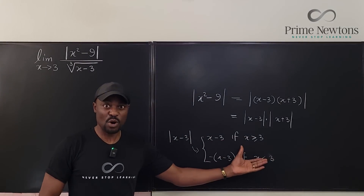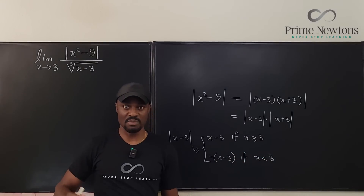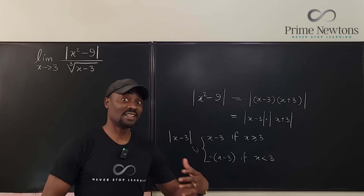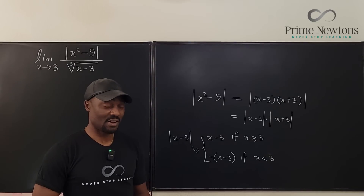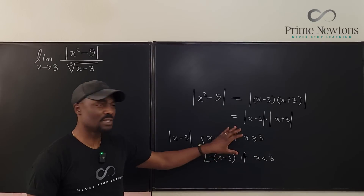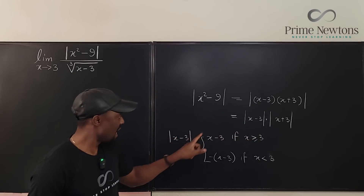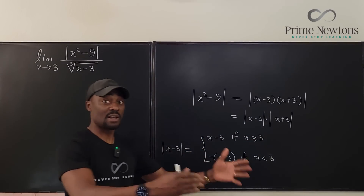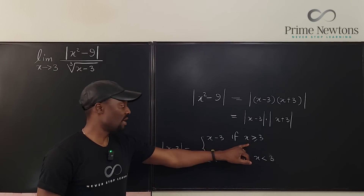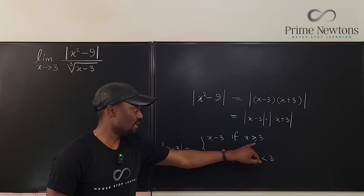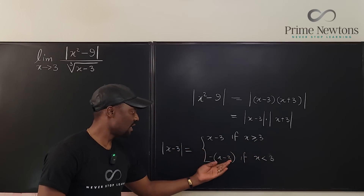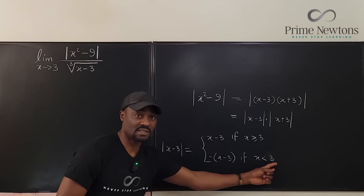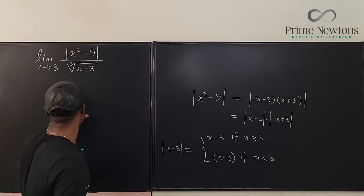So there are two limits you have to take — take one limit and then take another, otherwise you might be stuck. The absolute value of x-3 equals (x-3) when (x-3) is greater than or equal to 0, which means x ≥ 3, and equals -(x-3) when x-3 is less than 0, meaning x < 3.